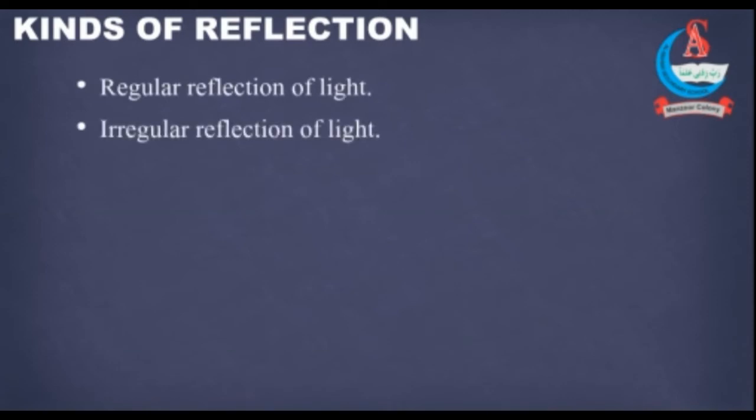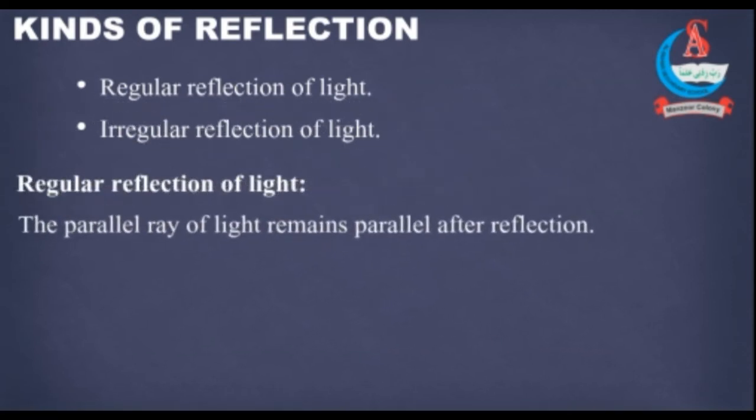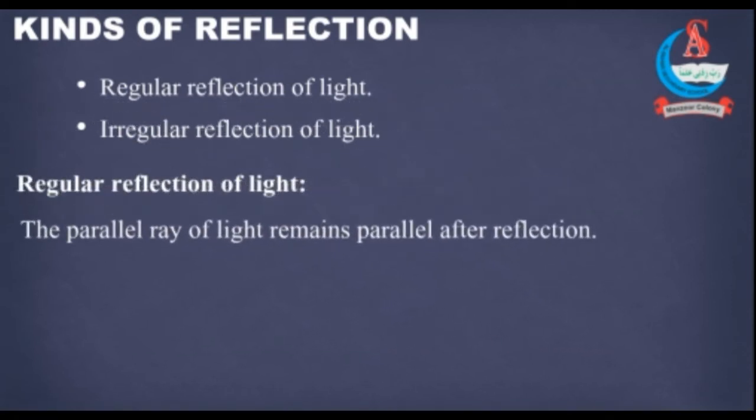Ab hum baat karengi kinds of reflection ki. There are two kinds of reflection. Regular reflection of light and irregular reflection of light. First, regular reflection of light. The parallel ray of light remains parallel after reflection.